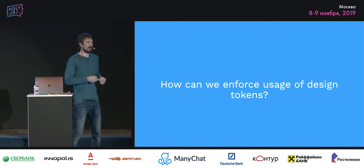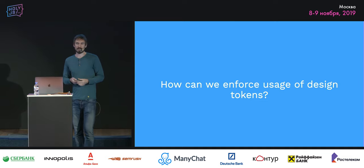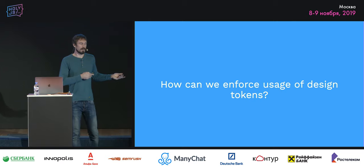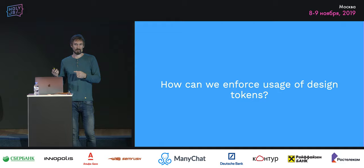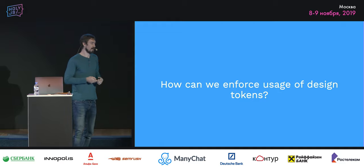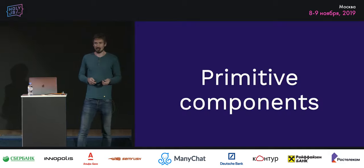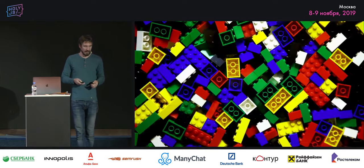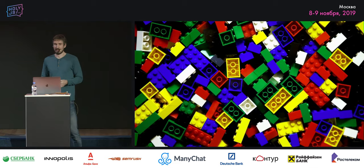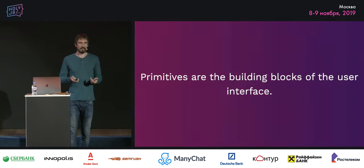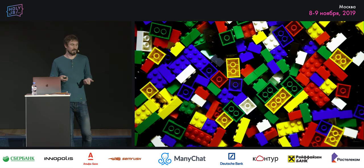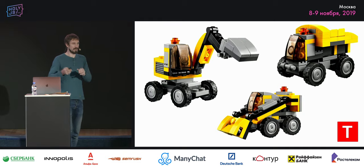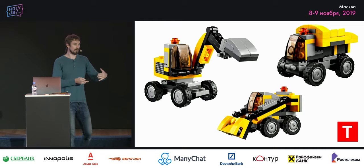Now that we've documented these things, the bigger question is: how can we enforce usage of design tokens? It's easy to create variables with CSS custom properties, but how do we apply them consistently across the whole product? I think the answer is primitive components.